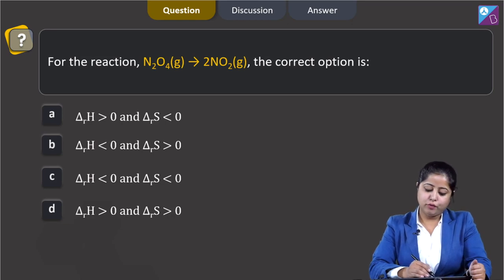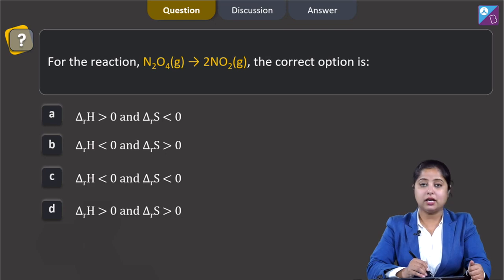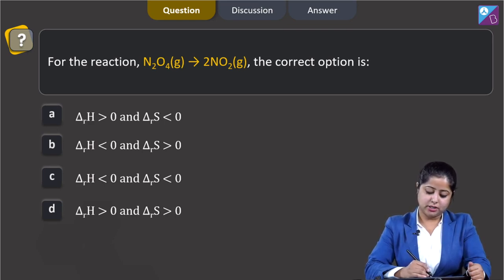Moving to the next question. For the reaction N2O4 gaseous gives 2 NO2 gaseous, the correct option is: option A, delta RH greater than 0 and delta RS less than 0; option B, delta RH less than 0 and delta RS greater than 0; option C, delta RH less than 0 and delta RS less than 0; and option D, delta RH greater than 0 and delta RS greater than 0.